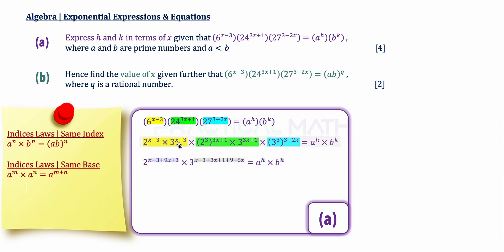Likewise for the base-3 terms: the powers add together. The 3 cubed inside the bracket means we multiply the power by 3, giving 9 minus 6x. So we now have 2 to the power of x minus 3 plus 9x plus 3, times 3 to the power of that full expression, equal to A to the power of H times B to the power of K.